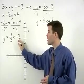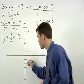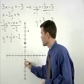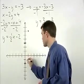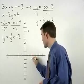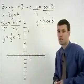For our second equation, the y-intercept is negative 2 and our slope is 1 half. So we go up 1 and to the right 2 to plot a second point.